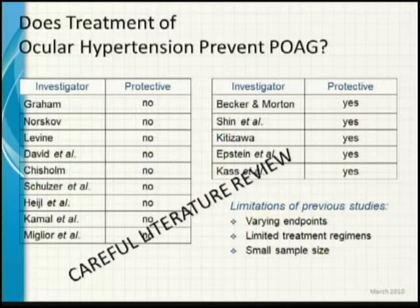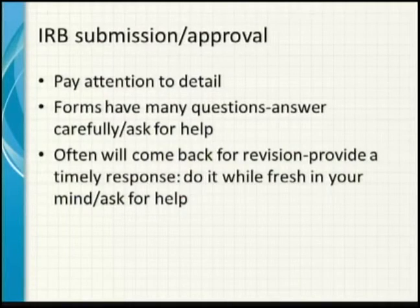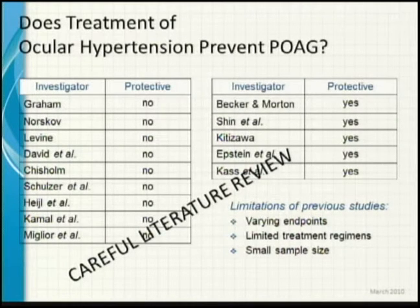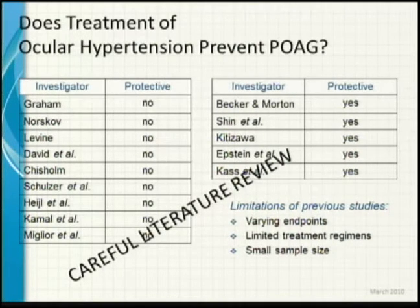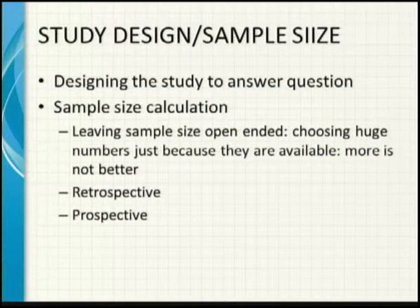A very nice example of pointing out a knowledge gap was Mike Kass's ocular hypertension treatment trial from Wash U. He showed studies that found ocular hypertension was protective for glaucoma and those that were not, pointed out limitations of previous studies related to varying endpoints, limited treatment size, and small sample size — and thereby came up with a very nice protocol that has given us good answers on how to approach patients with ocular hypertension.